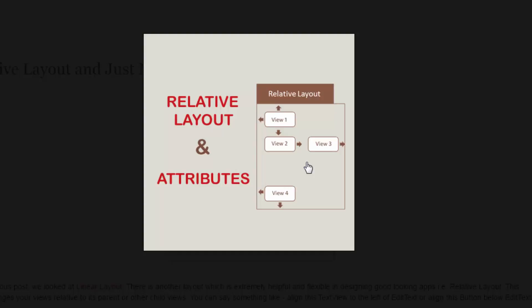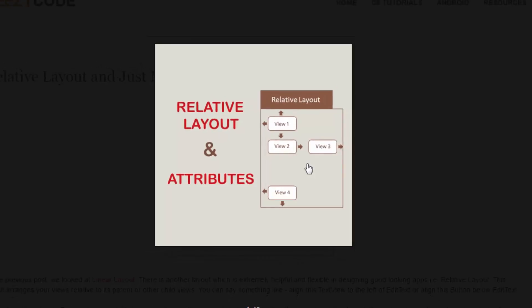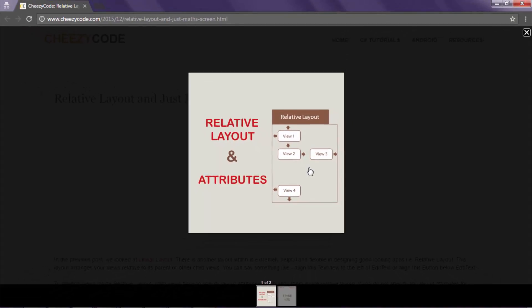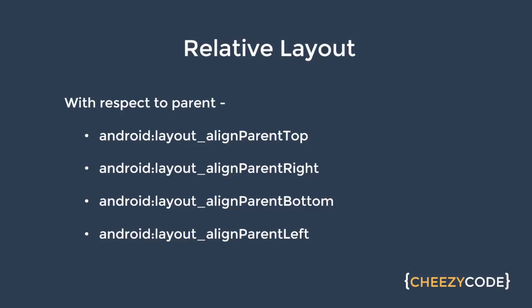Views are either relative to the parent or relative to the other child views. This rendering is based on the attributes that we specify. So let's see what these attributes are and understand how we can use them to render a specific layout.